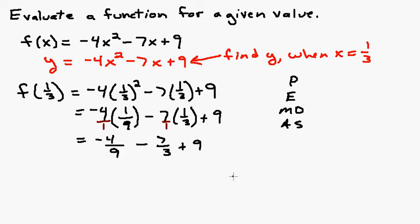Well at this point we need to get a common denominator. So let's get a common denominator of nine. I'm going to do these two fractions first. A lot of times when you have just adding a whole number at the end you can kind of do it in your head. I'm going to multiply this by three over three to change it to ninths and bring the negative four ninths down. Minus seven times three is twenty-one ninths plus nine.